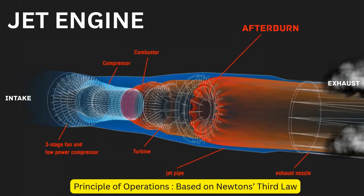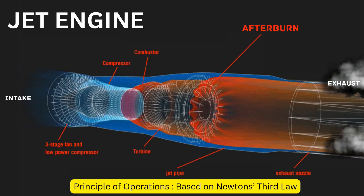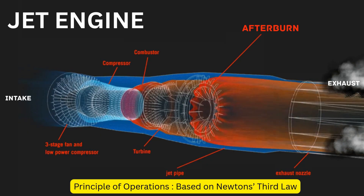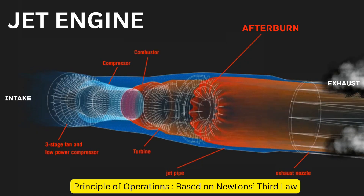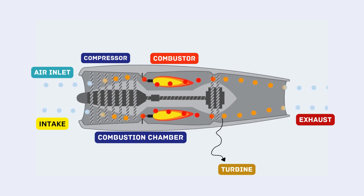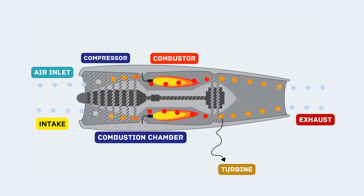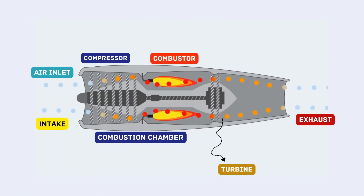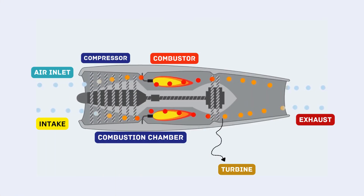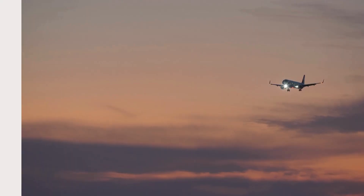Jet engines are a remarkable blend of advanced engineering and physics, operating on Newton's third law — for every action, there's an equal and opposite reaction. Air enters through the intake and is compressed by rotating blades, then mixed with fuel and ignited in the combustion chamber. The resulting hot gases expand rapidly and shoot out the back through the exhaust nozzle, generating thrust that pushes the aircraft forward.